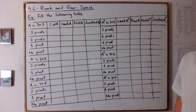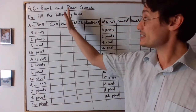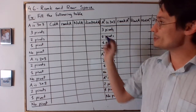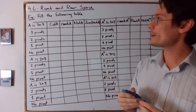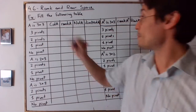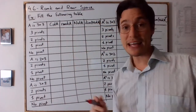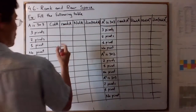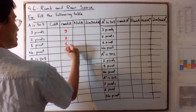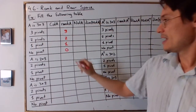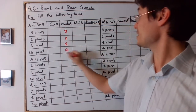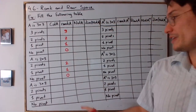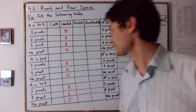The first thing we should fill in is the rank A column. I'm going to use red for the first columns. The rank of A is the number of pivots, because each pivot happens in a different column. So for a 3x3 matrix: three, two, one, zero. Then for the other cases, we have two, one, zero, and then two, one, zero.